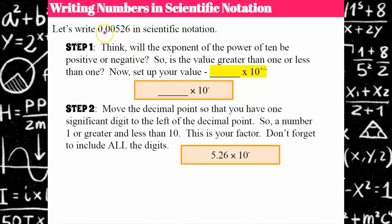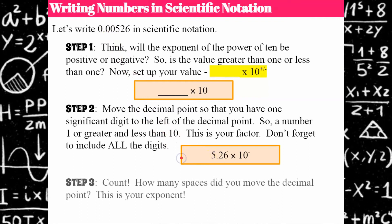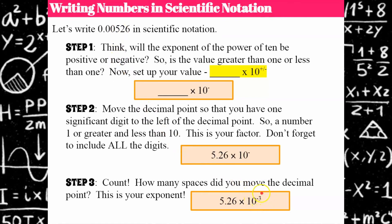Step two: move the decimal point. The decimal point is here, and I'm going to move it to the right of the five so I have one significant digit to the left. Remember, all those zeros are not significant — zero is not a significant number. Step three: count. I moved this decimal point one, two, three spaces — so it's negative three. So 5.26 times 10 to the negative three is scientific notation for this value written in standard form.